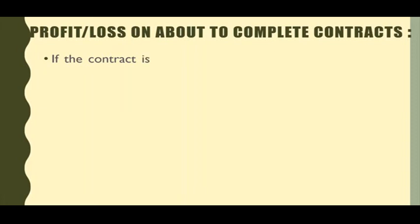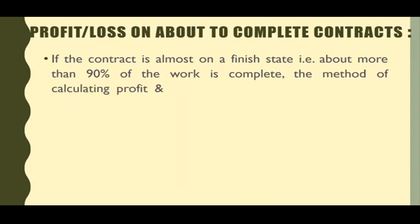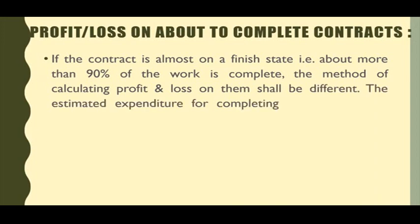Normally kya hota hai ki jab almost completion state pe koi contract aata hai, to lagbhag iska 90% part complete ho chuka hota hai. Ab 90% se thoda sa, yani ki 10% lagbhag reh gaya ya ho sakta usse bhi kam raha hota ho. To us time per kis tarike se hum profit loss calculate karenge, voh thoda sa different hoga.